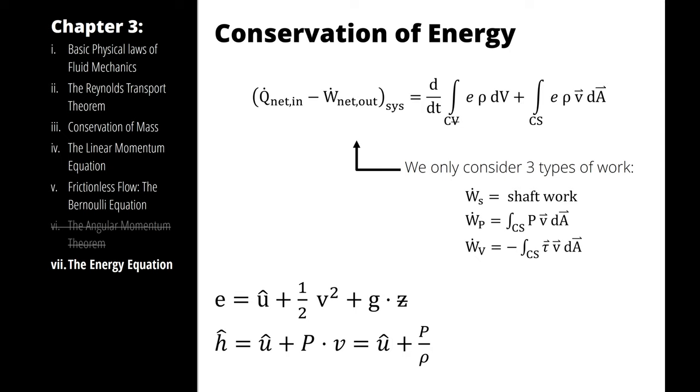Therefore, lowercase e is going to be U-hat plus one-half times velocity squared plus gravity times Z, that's height measured relative to something, and enthalpy will be H-hat, and that's U-hat plus pressure times specific volume, which again, in order to try to avoid the confusion that comes along with so many different types of V-terms, we often write as internal energy plus pressure divided by density.